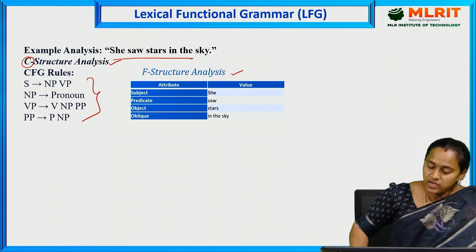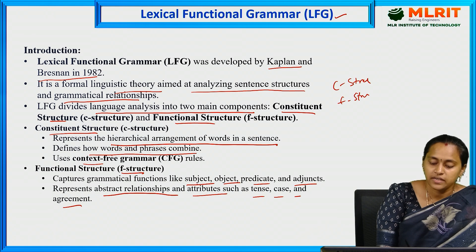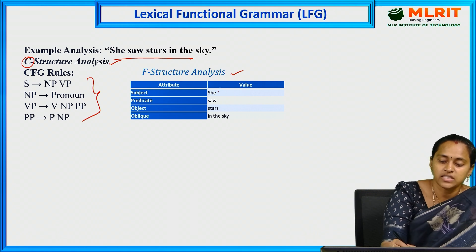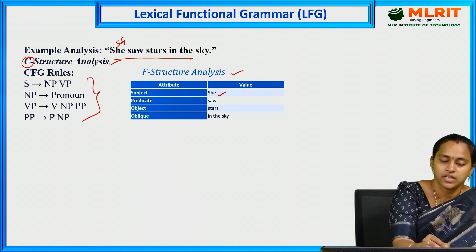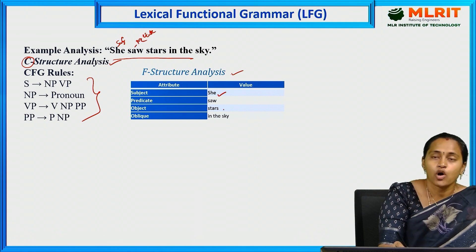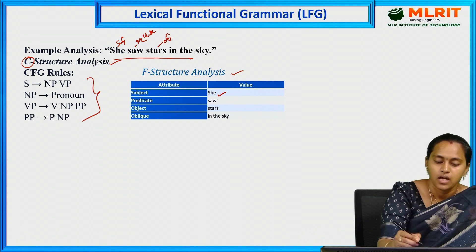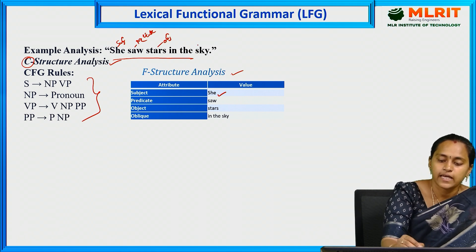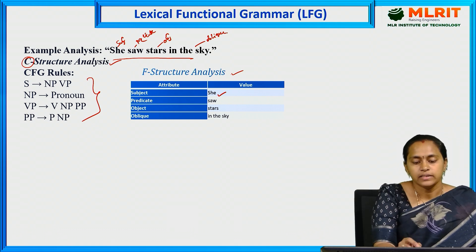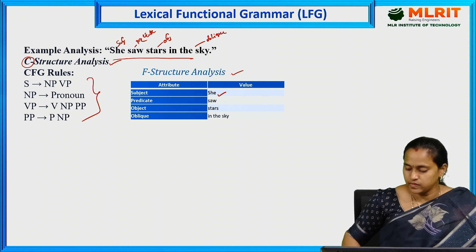Next, the F-structure. The F-structure contains functions like subject, object, and predicate. In this sentence, 'she' is the subject, 'saw' (size) is the predicate, 'stars' is the object, and 'in the sky' is the oblique. This is the F-structure analysis and overall example of lexical functional grammar.